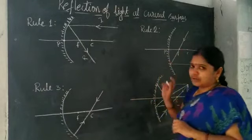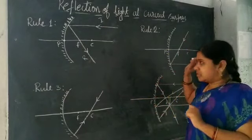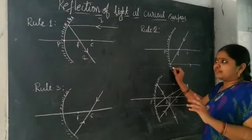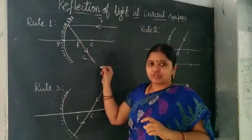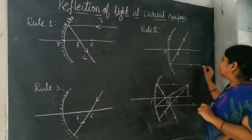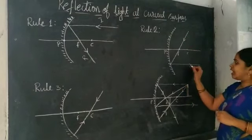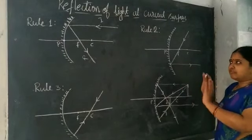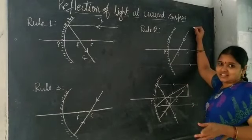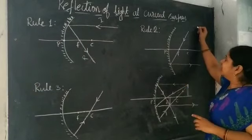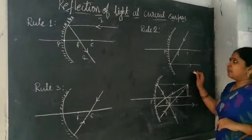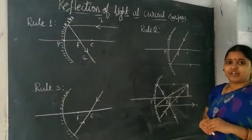If that is clear, we will go to rule number 2. The rays which are passing through the focus — don't get confused: in rule 1, rays are parallel and after reflection they come to the focus. In rule 2, the rays which are passing through the focus, after reflection, will become parallel to the principal axis. Observe the arrow marks carefully — they say everything. Pause here and draw the ray diagram in your book.